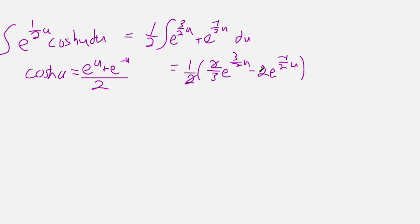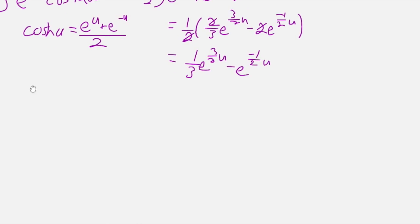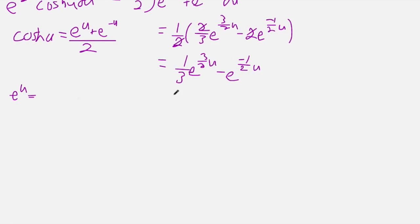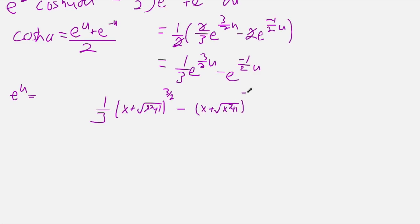So we have one half times two thirds e to the 3/2 u minus 2 times e to the negative one half u. We have some nice cancellations here, and so this is equal to one third e to the 3/2 u minus e to the negative one half u. Now we can substitute back, noting that e to the u equals x plus the square root of x squared plus 1. So the expression is equal to one third times (x plus the square root of x squared plus 1) to the 3/2 power, minus (x plus the square root of x squared plus 1) to the negative one half power, plus C.